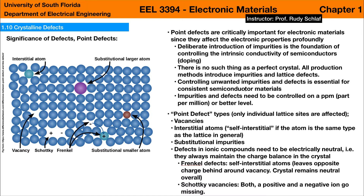Let's move on to subchapter 1.10: Crystalline Defects. Defects are critically important for semiconductors because they affect conductivity profoundly. There is no such thing as a perfect crystal — all production methods introduce impurities and lattice defects. The industry has gone to great lengths to control impurities with very high efficiency. Semiconductor materials are among the most pure materials on Earth, routinely controlled to an impurity level of one part per million or better. Once ultra-pure semiconductor material is obtained, defects are introduced deliberately to tune the conductivity — this is called doping.